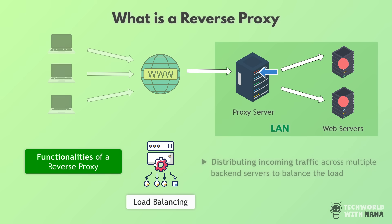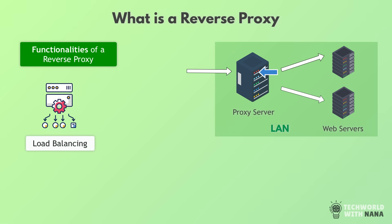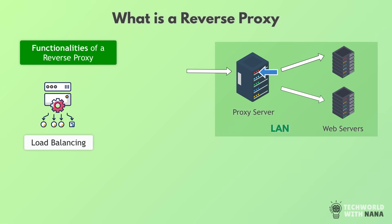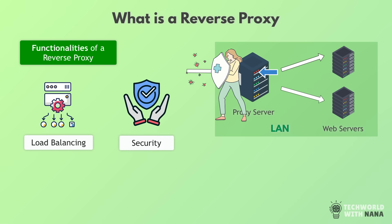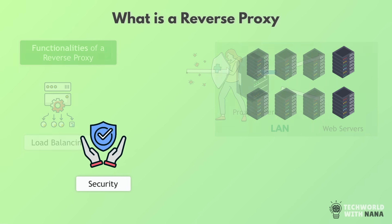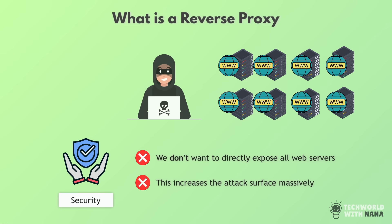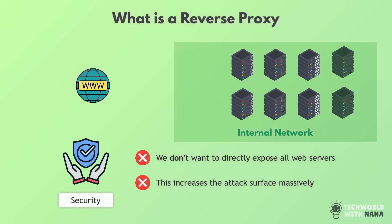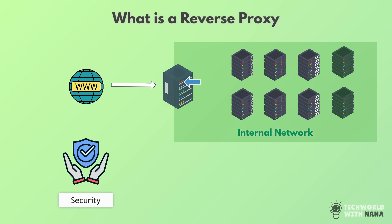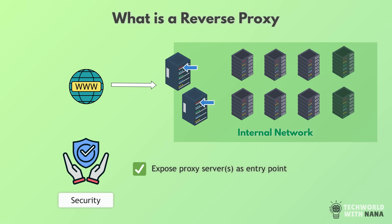But load balancing is not the only functionality. Reverse proxies actually have most of the features that forward proxies have, like acting as a shield to protect the servers. When you have hundreds of servers and they all have access to sensitive data or code, it's really dangerous to expose all hundred servers directly to the internet. Instead, you protect them in an internal network and put one or a few proxy servers as an entry point, configuring all the security measures on that handful of proxies.